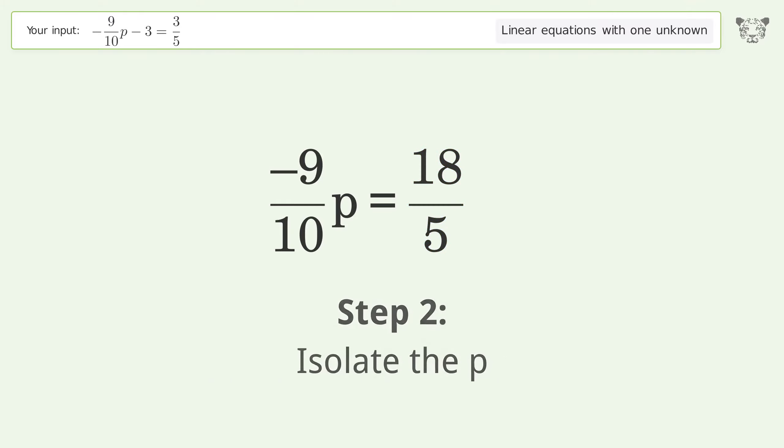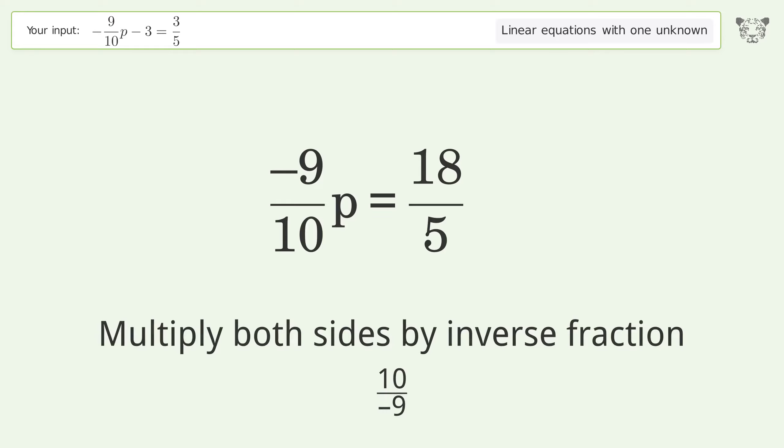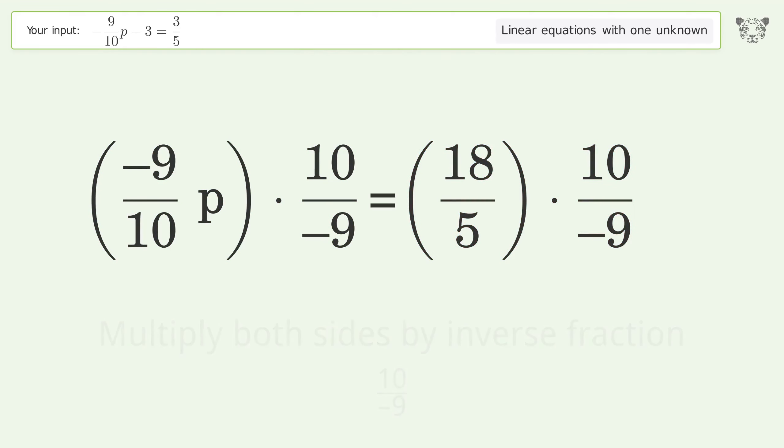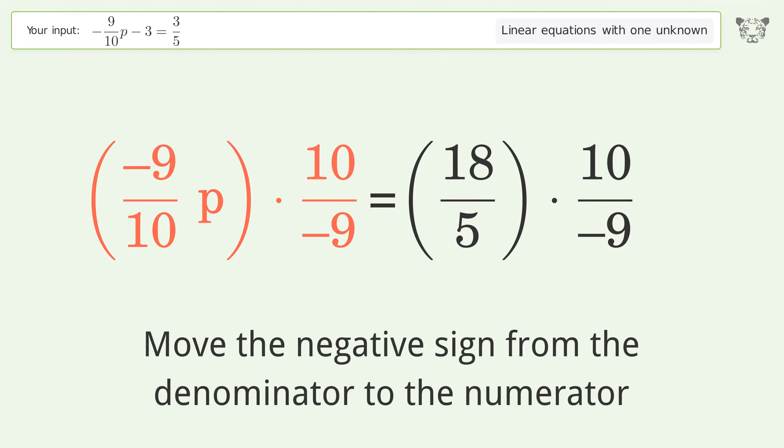Isolate the p. Multiply both sides by the inverse fraction 10 over negative 9. Move the negative sign from the denominator to the numerator.